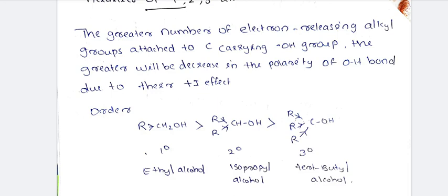Therefore, primary alcohols are more acidic than secondary, which are more acidic than tertiary alcohols. Alcohols are feebly acidic overall. The order of acidity is: primary alcohol > secondary alcohol > tertiary alcohol.